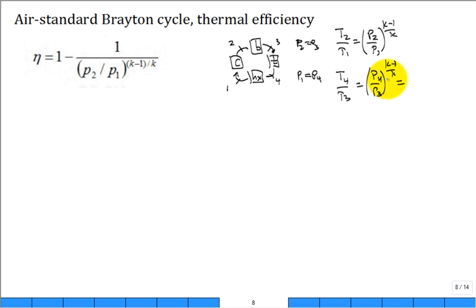Which is, p4 is equal to p1 and p3 is equal to p2, to the k minus 1 over k. This is a critical observation right now. And you say look at what happens if I take t4 divided by t3 and I multiply by t2 divided by t1.